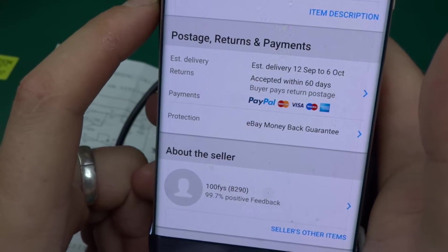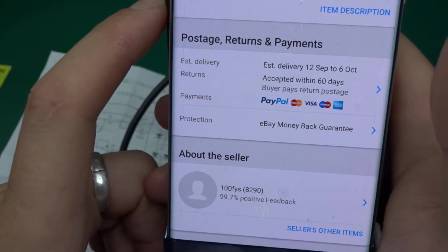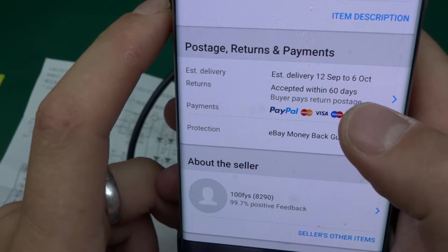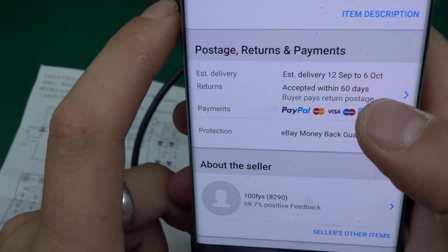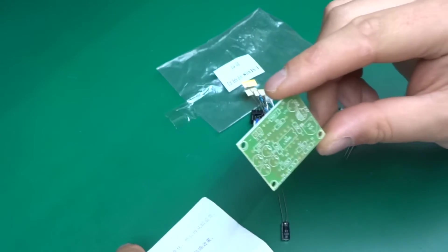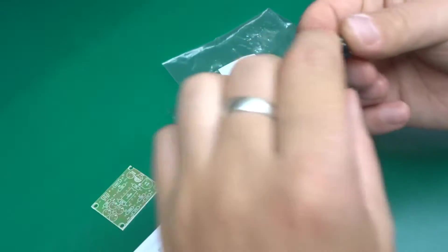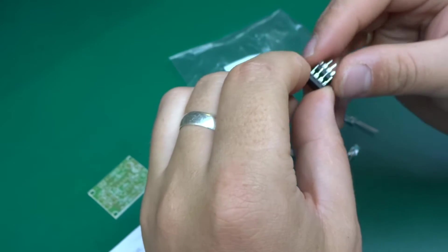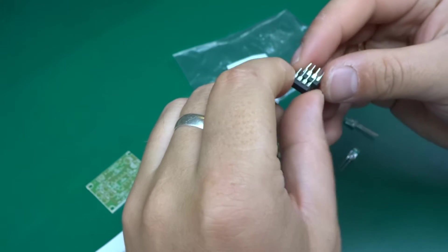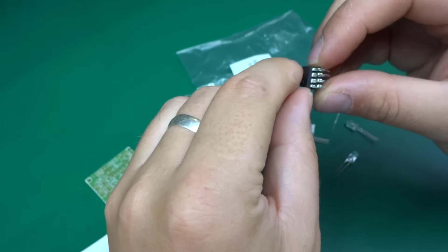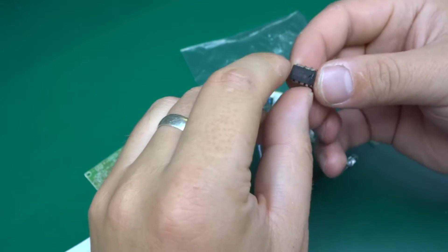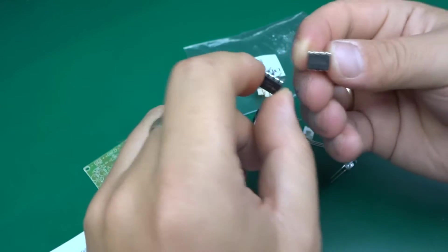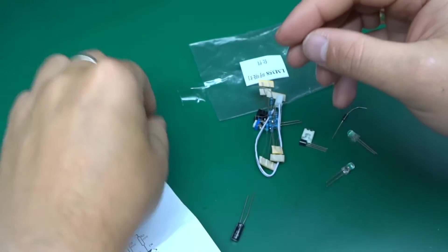By the way, it came from seller code 100FYS and the item number is 291804667511. So there's a PCB, there's the LM358 which is a dual op-amp, and I think by accident I got two in the pack, so I've got a spare LM358. Excellent.